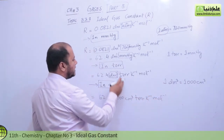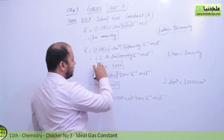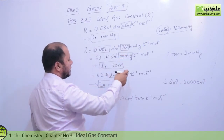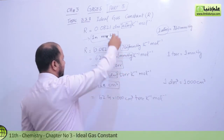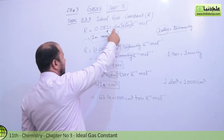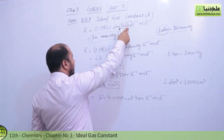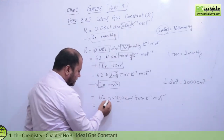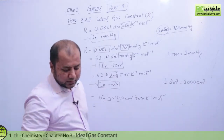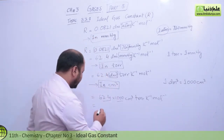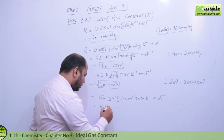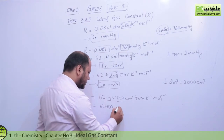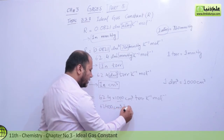In this way, students, you can convert it. 62.4 multiplied by 1000 gives the answer in cm³·mm Hg and also in Torr. You can multiply by 1000 and get the answer in cm³·atm per kelvin per mole as well. So the answer that comes to you will be 62,400 cm³·Torr per kelvin per mole.